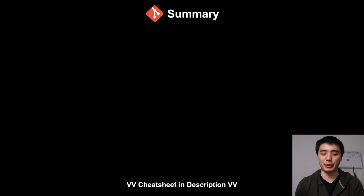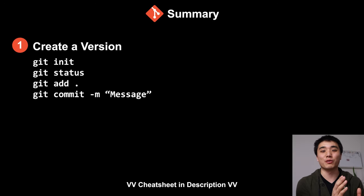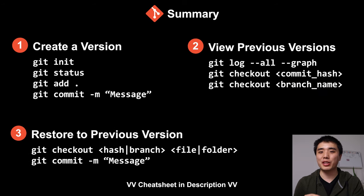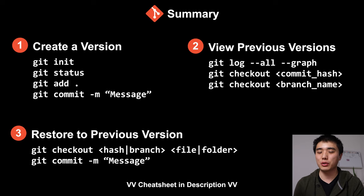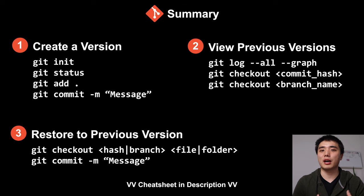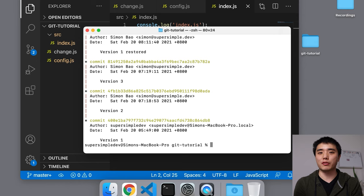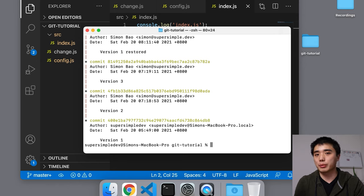Congratulations — we just recreated the version history feature of Google Docs and Microsoft Word using Git. Now that we're done comparing Git with Google Docs, for the rest of the tutorial I'll use the words 'commit' and 'commit history' to help you get familiar with Git terminology. We finished the main project; now I'll show you some miscellaneous features of Git that you'll find useful.